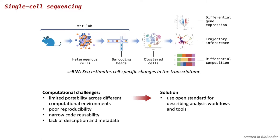Collected gene expression data is usually saved in a form of feature barcode metrics that is used for cluster analysis, subsequent cell type assignment, optional trajectory inference, differential expression, and composition analysis.